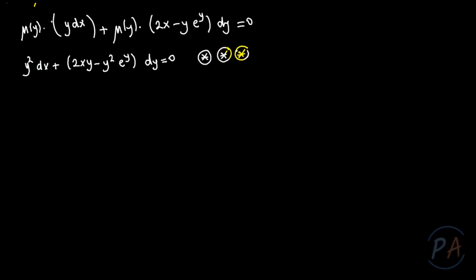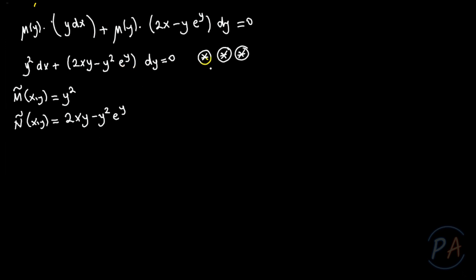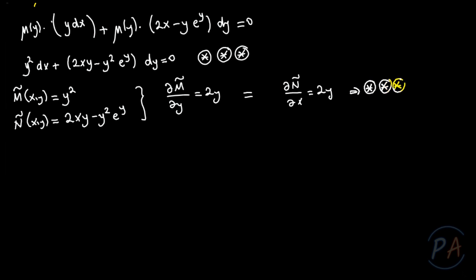Let me check if the (three stars) equation is exact or not. I name the coefficient of dx as M̃(x,y) = y² and the coefficient of dy as Ñ(x,y) = 2xy minus y²·e^y. The partial derivative of M̃ with respect to y is 2y, and the partial derivative of Ñ with respect to x is also 2y. Both are equal, so (three stars) is exact.